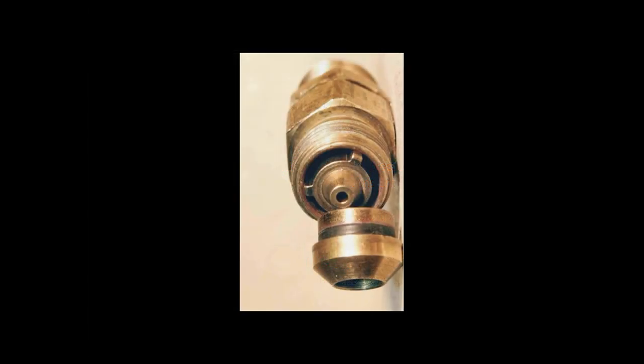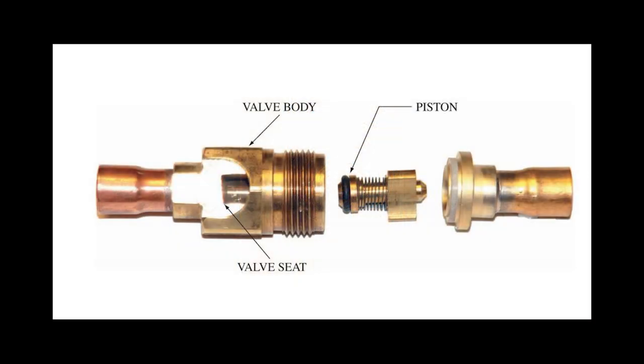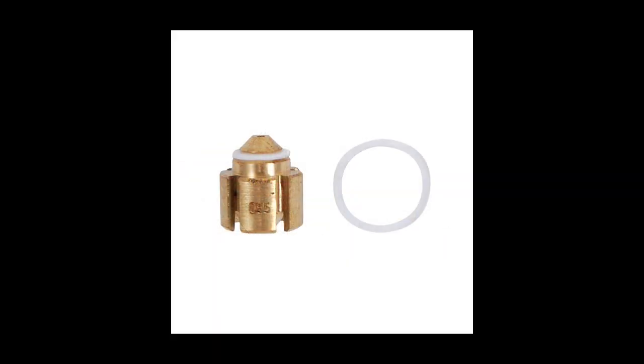A fixed orifice is just as it sounds. It's a hole with a set size that determines the amount of flow from the high side to the low side. The piston variant allows for some self-regulation of the system pressure, but it's basically a fixed orifice as well. The fixed orifice is found in many of your refrigerators, freezers, and simple air conditioners. It's cheap and easy to manufacture, and its simplicity lends to its reliability.